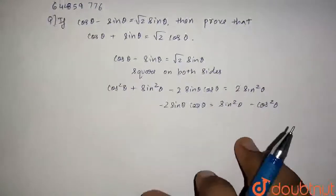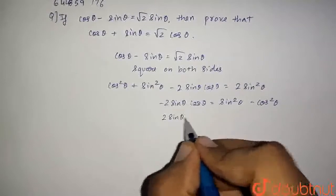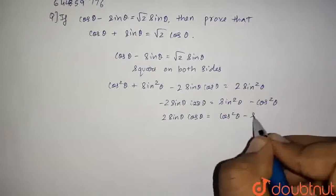So basically, when we will multiply this by minus on both sides, we will get 2 sin θ cos θ is equal to cos²θ minus sin²θ.